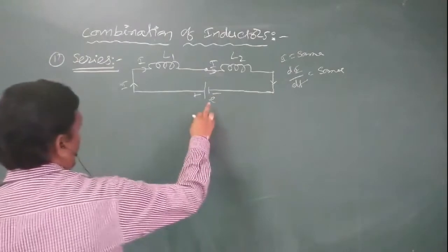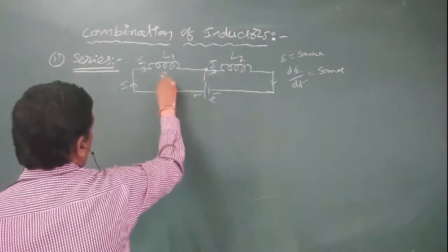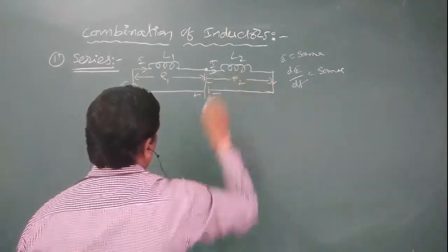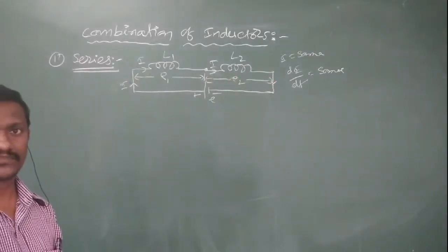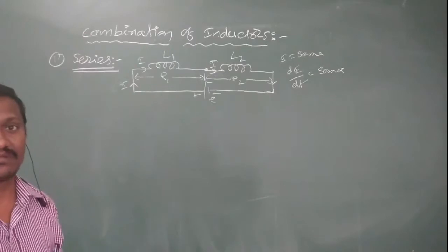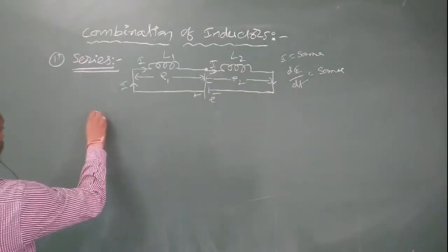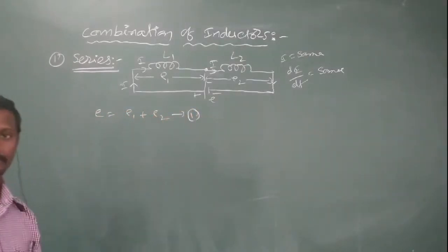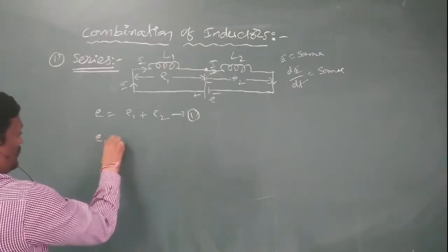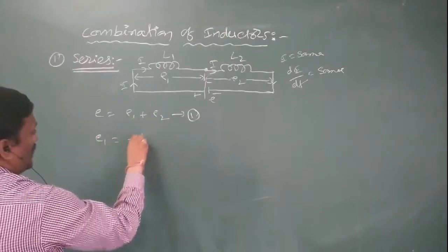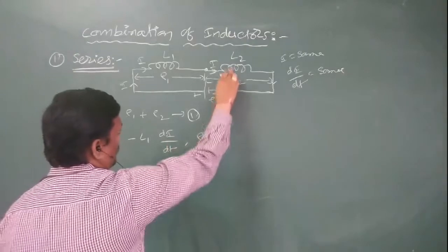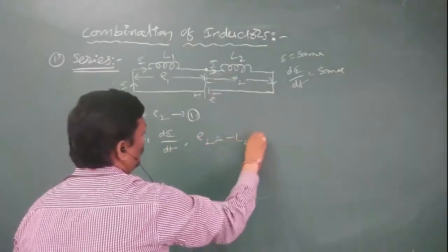In series combination, the applied EMF is divided into two parts: some part E1 is developed across the first inductor, and the second part E2 is developed across the second inductor. So in series combination, current is the same but the potential difference or EMF is distributed. The applied EMF E is equal to E1 plus E2. According to the law of self-induction, the induced EMF E1 equals minus L1 times dI/dt, and E2 equals minus L2 times dI/dt.